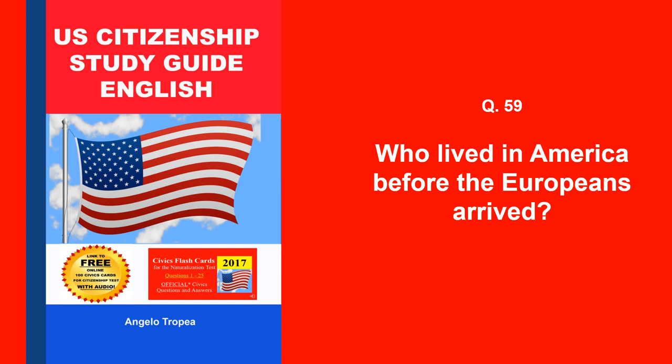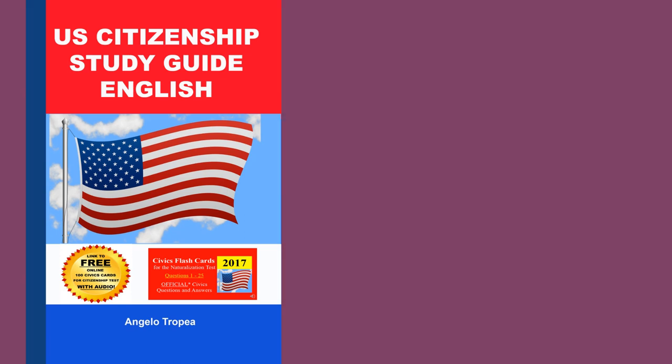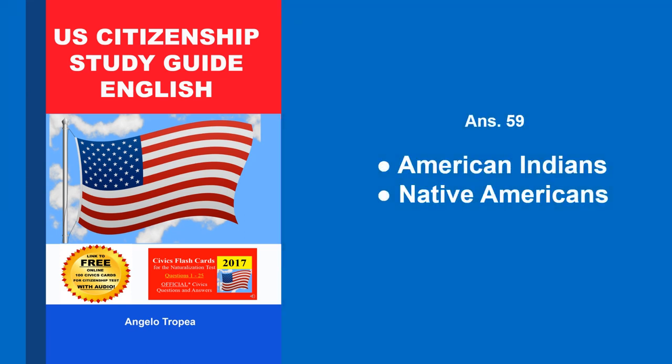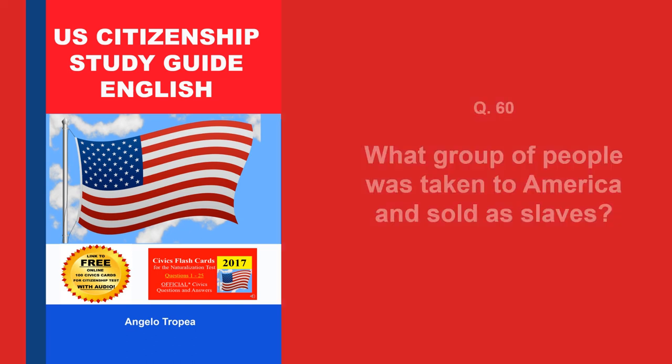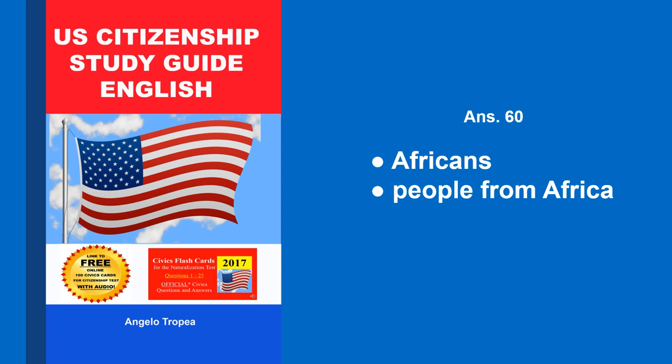Who lived in America before the Europeans arrived? American Indians. Native Americans. What group of people was taken to America and sold as slaves? Africans. People from Africa.